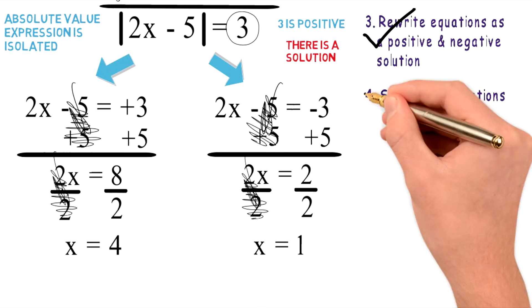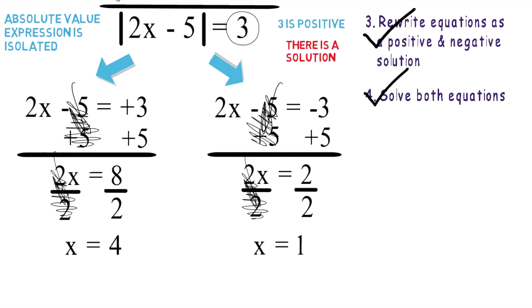So now let's check off. And now we'll go on to number five, which says to check for extraneous solutions. So we'll take our solutions, which were four and one, and we're going to plug them in.